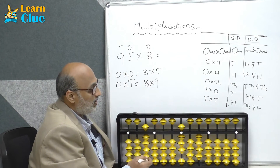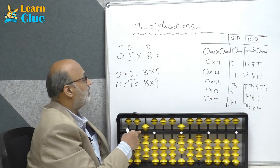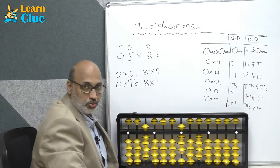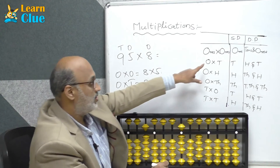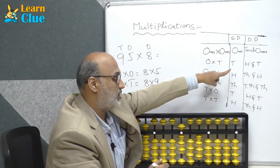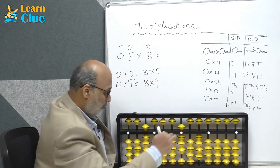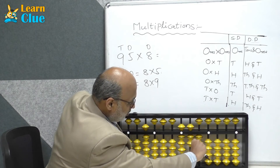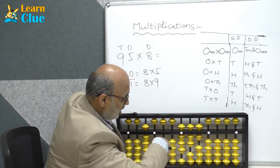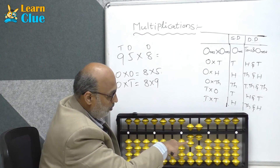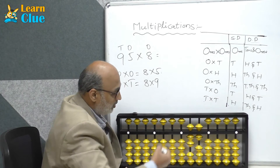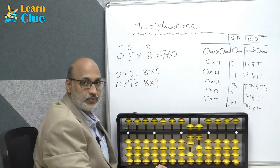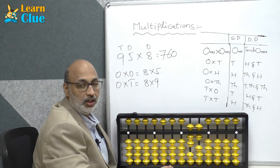Now which one is left — ones into tens, that is 8 into 9. 8 nines are 72. For ones into tens, if it comes as a double digit you have to place in hundreds place first and then tens place. So place 72 over here. Clear the problem. The answer is seven hundred and sixty.